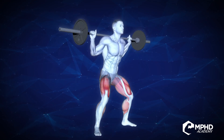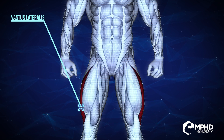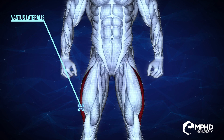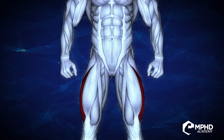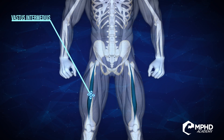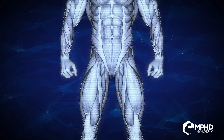Then you have the outer sweep, or the outer part of the quad, which we call the vastus lateralis. Its actions are similar to the vastus medialis in that it extends the leg, as in leg extensions and squats. Now, underneath all the quad muscles lies the vastus intermedius — it also extends the leg.